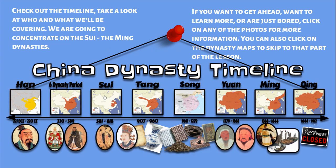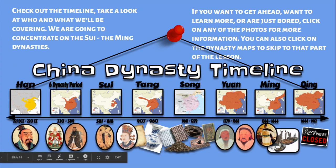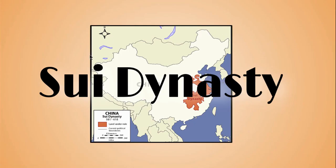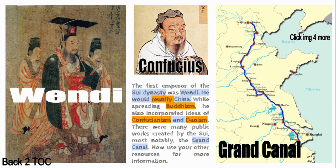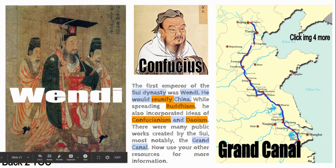These are the five dynasties we're going to talk about. Let's get started with the Sui dynasty. The Sui dynasty was first ruled by a man named Wendi, who reunified China. They spread Buddhism from India, and Wendi also incorporated Confucianism and Daoism together. There were a lot of public works, and one major achievement was the Grand Canal — still in existence — one of the largest man-made canals ever, which made travel, communication, and trade much easier.